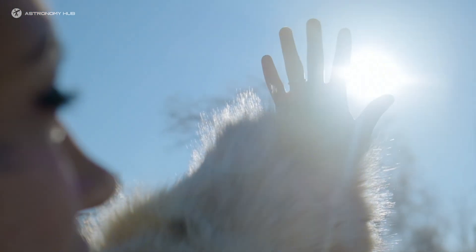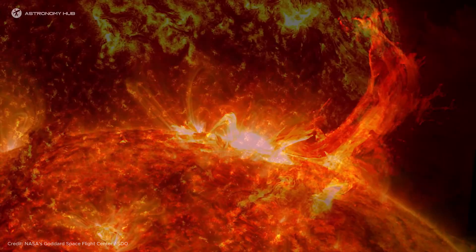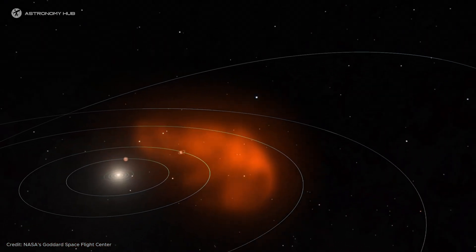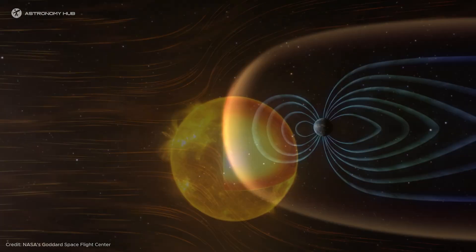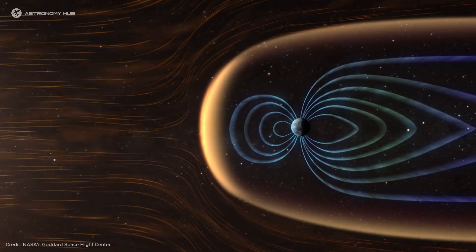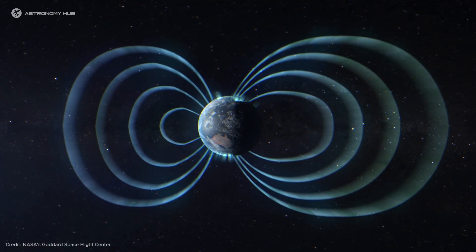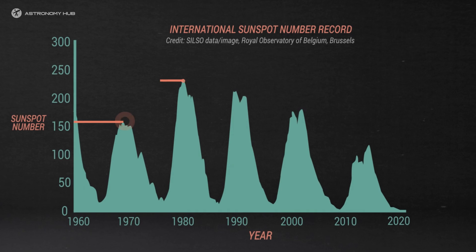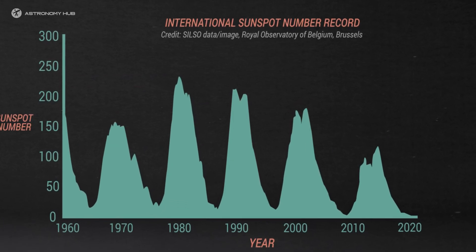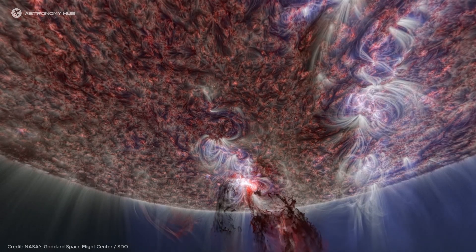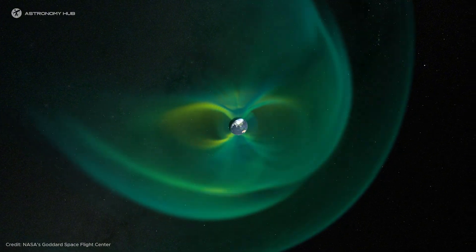The Sun, our nearest star, is not only our source of heat and light, but also a dynamic celestial body that affects the weather of space. In this video we will explore solar phenomena, the structure of the Sun, the complex nature of solar storms, the mesmerizing auroras they create in our planet's atmosphere, and what other effects this cosmic phenomenon has on our planet. By the end of the video, you will have a better understanding of the secrets of solar events and their impact on our daily lives.